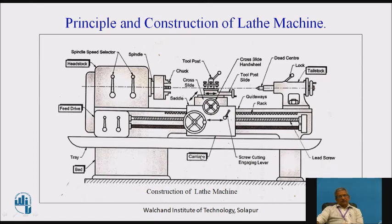The apron, saddle, cross slide, compound slide, tool post, and tool post locking nut are components of the carriage. There is a tray for collecting removed material. The bed is the base on which the entire assembly is mounted. The feed drive mechanism controls the rotation of the lead screw by changing lever positions. Lower RPM of the lead screw compared to the spindle gives better finish; faster lead screw speed gives coarser finish.